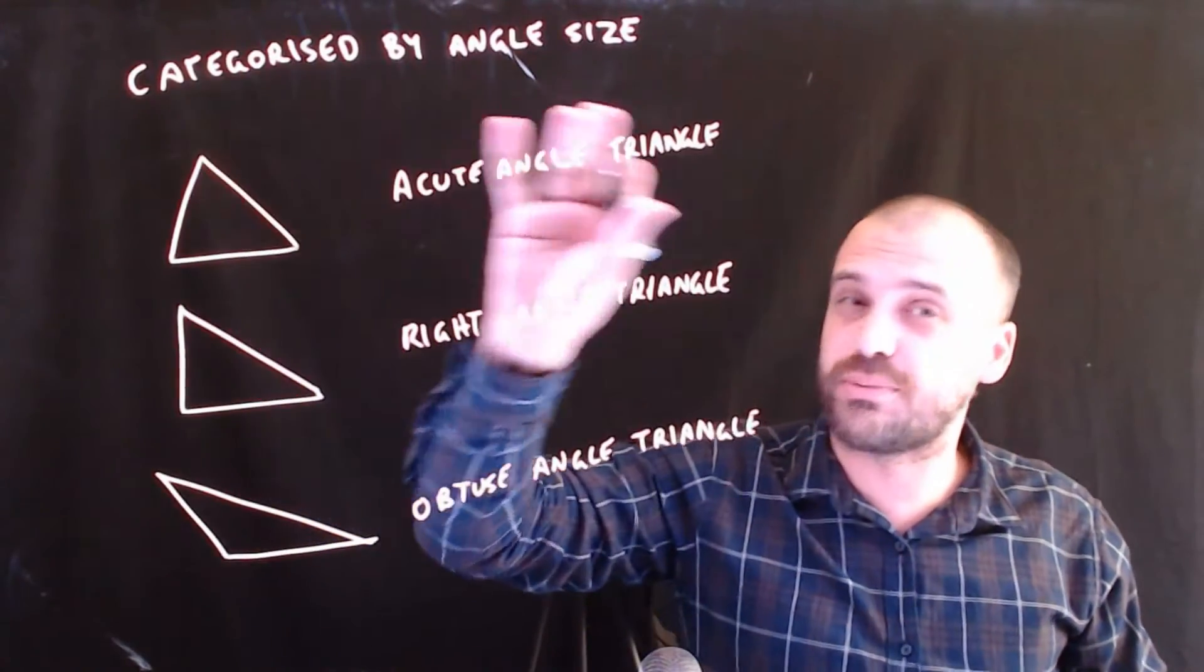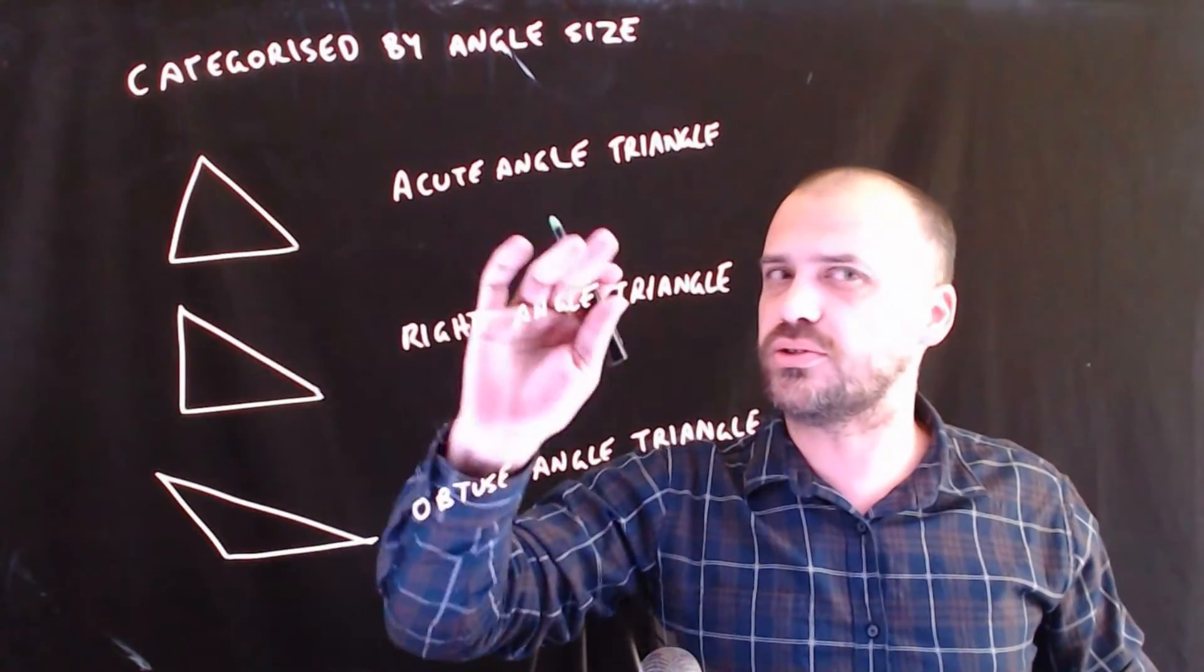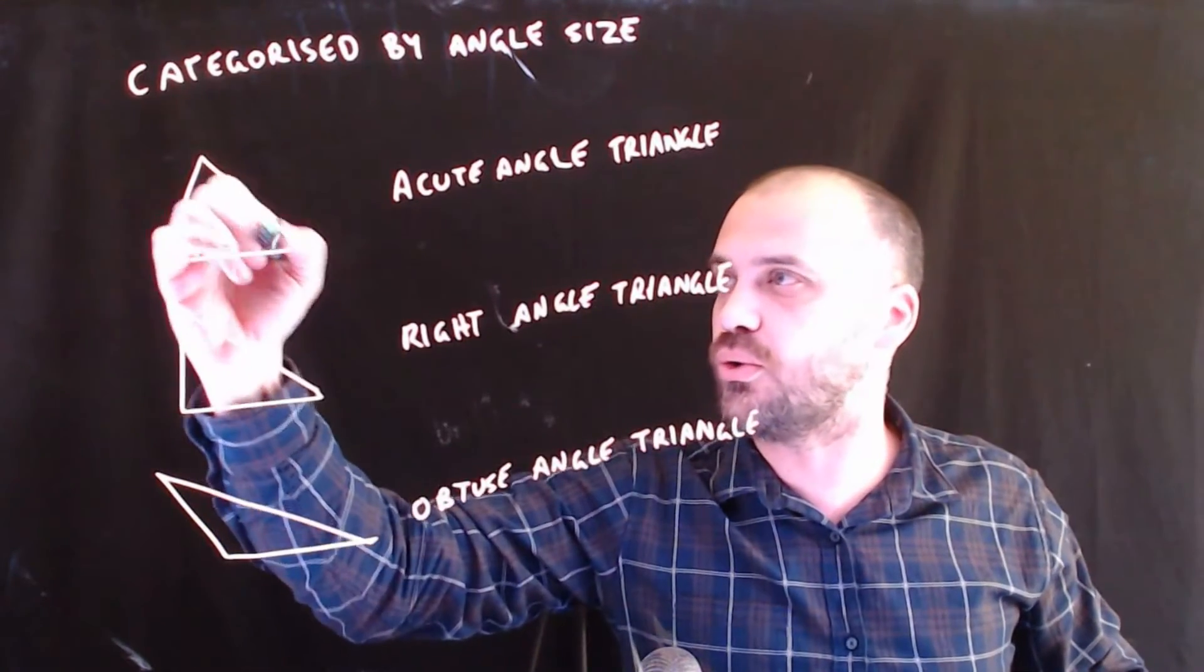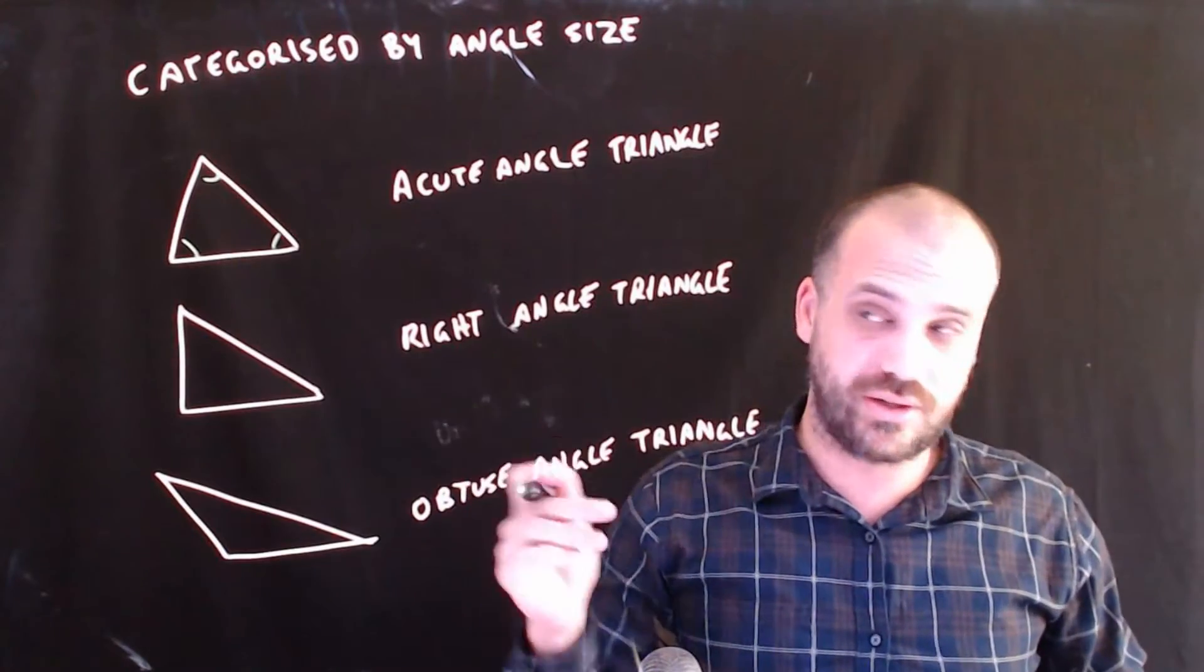So three kinds of triangle categorized by angle size. This is called an acute angle triangle because all of the angles are acute, less than 90 degrees.